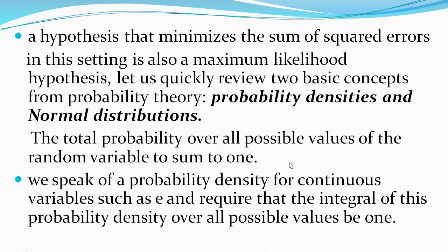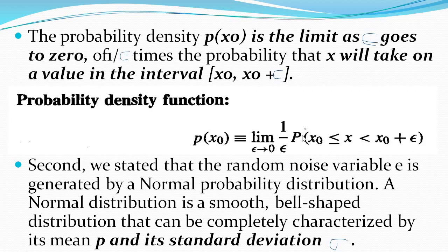The probability density function is represented with this formula: P(x0) is approximately equal to, as epsilon tends to zero, 1 over epsilon times the probability that x0 ≤ x ≤ x0 + epsilon. That means whatever noise is present, we are taking it to zero, and the probability is computed for a randomly chosen instance taken in the interval between x0 and x0 plus the noise value.